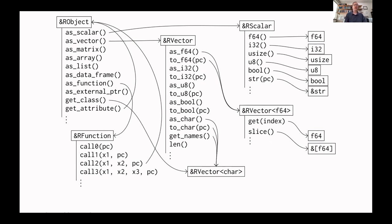I mentioned a robust type system. Everything in R's C API that package developers can access is just through a pointer to some obscure type — we don't actually get to handle the data except through a pointer to that type. We represent that in Rust as a reference to an R object. You can then call different functions, say, as_scalar, meaning treat this as a scalar, and at that point you can get an F64 or an I32. These all have the ability to return Results, so you can check if there's been a mistake. You can go from an R object to a vector, and from a vector treat it as an F64 or I32 vector, getting individual elements or the slice to work with directly.